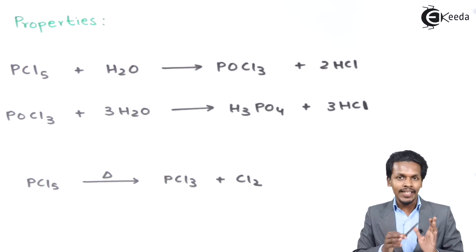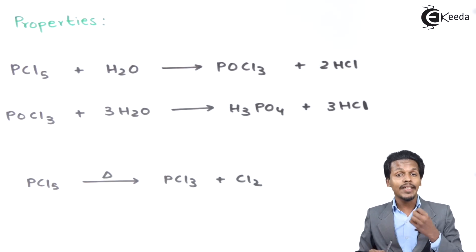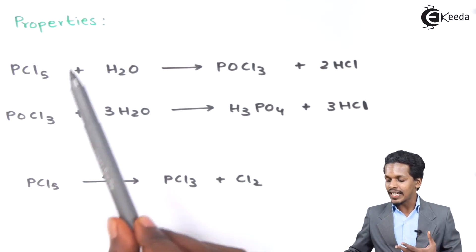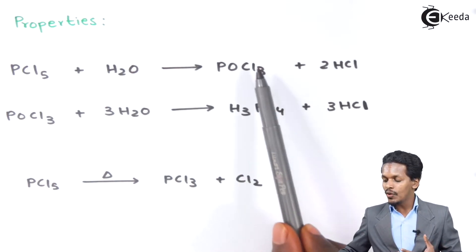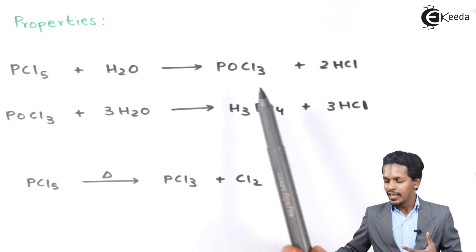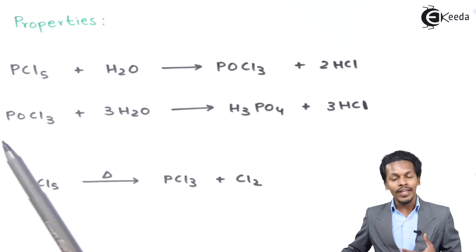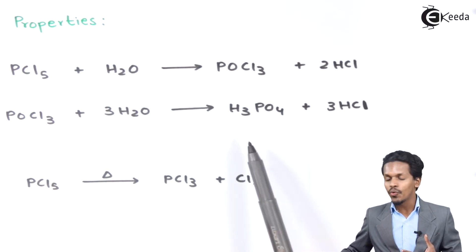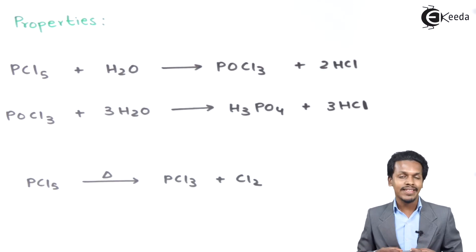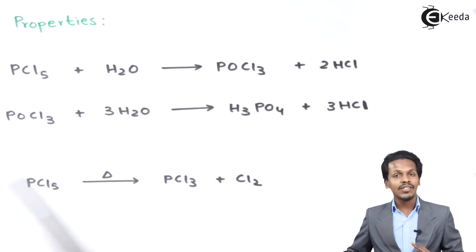The first one: whenever PCl5 is reacted with water, it forms POCl3, that is phosphorus oxychloride, along with 2 moles of HCl. This on further reaction with water forms H3PO4, that is phosphoric acid, along with 3 moles of HCl. These are the two reactions I have mentioned here.